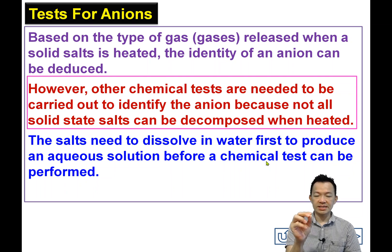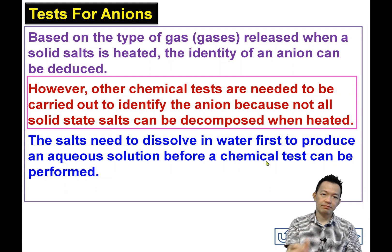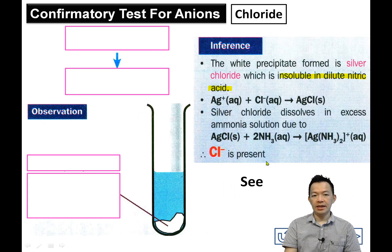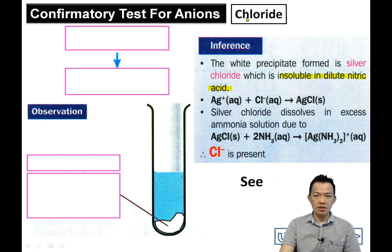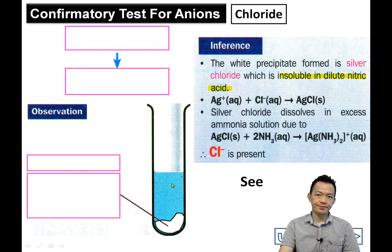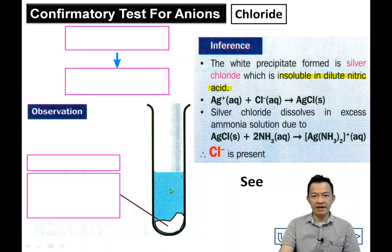So we will test the liquid. For example, number one — confirmatory test for the anion called chloride. Prepare the chloride solution. It can be potassium chloride, sodium chloride, calcium chloride, or whatever chloride.